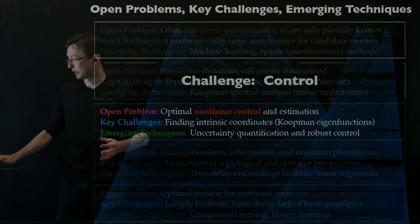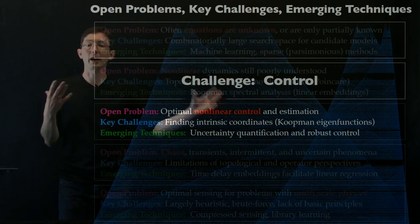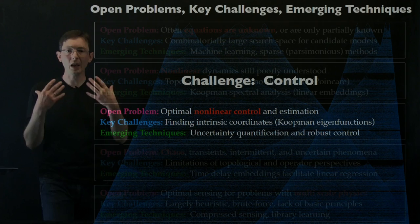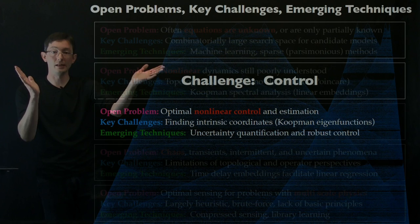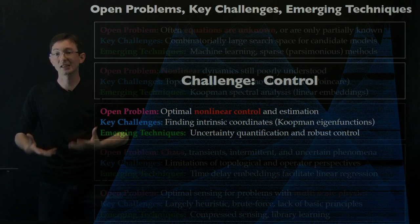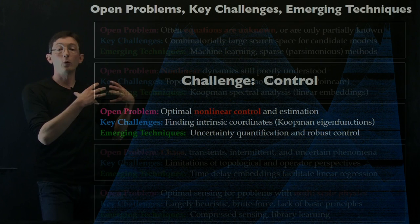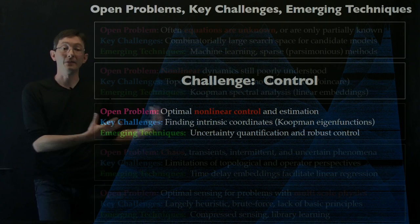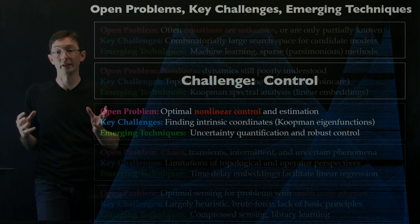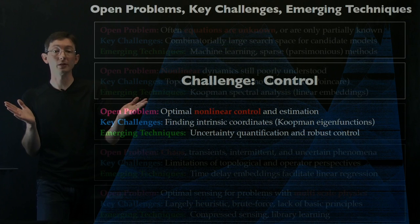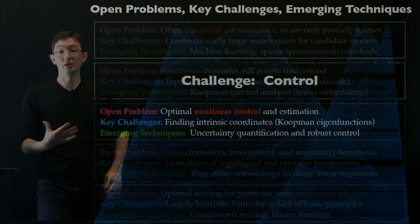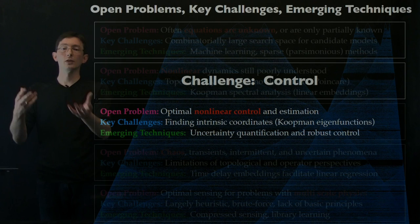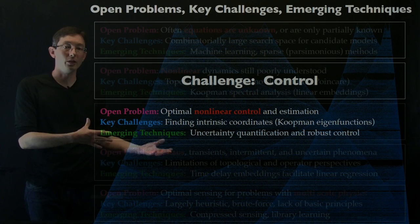One of the core challenges in this dynamical system is optimal nonlinear control and estimation. This is one of the huge promises of Koopman theory: that transforming into these better coordinate systems where things look more linear will allow us to use textbook methods and linear control theory like linear quadratic regulators and Kalman filters for strongly nonlinear systems. Simple one-line commands in MATLAB, if I had the right coordinate system, might allow me to regulate and estimate even these strongly nonlinear systems. That's the goal we're going to talk about now: how to use Koopman for nonlinear control.